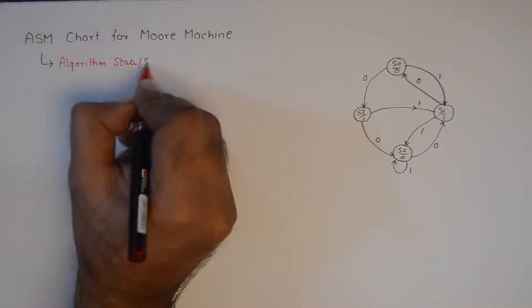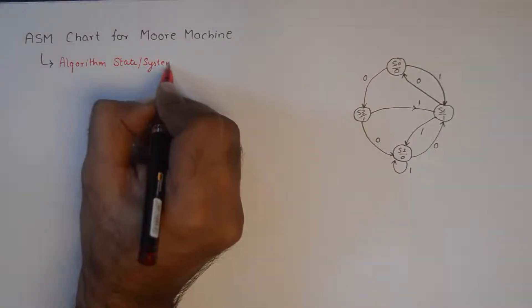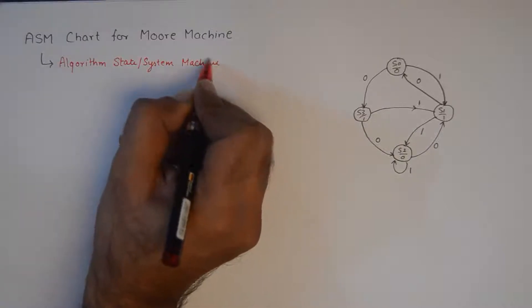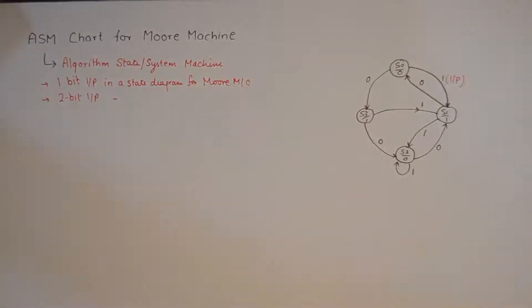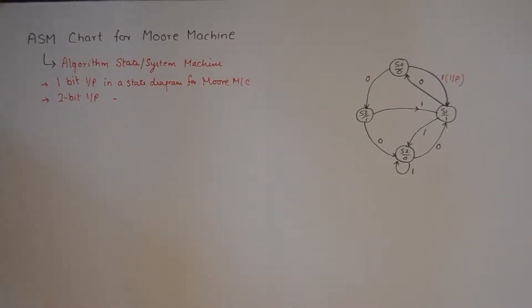Now the reason why we draw ASM chart is the fact that it tells us about the hardware requirement of a system. We'll draw the ASM chart for one bit input as well as for two bit input. For a two bit input Moore machine, the state diagram will look a little complicated but the ASM chart is not that tough to draw.